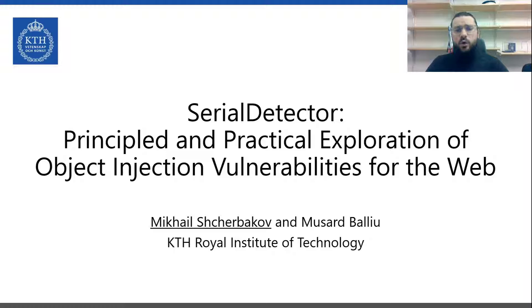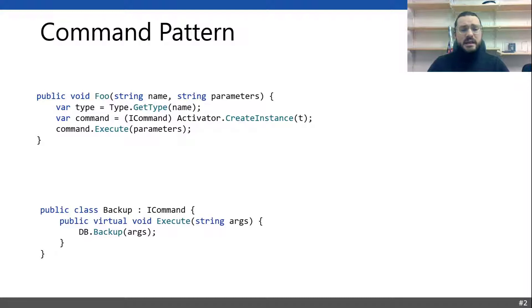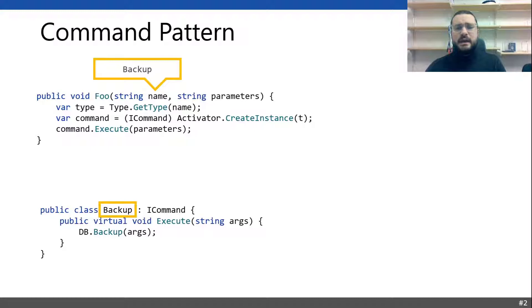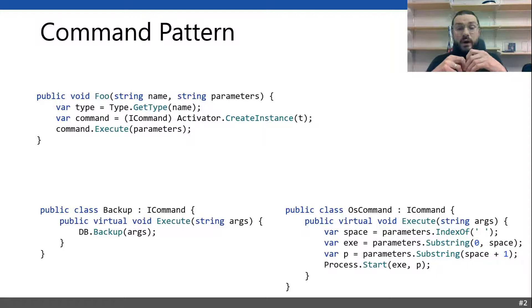I start with two examples that illustrate what an object injection vulnerability is. This is an implementation of the command pattern in object-oriented languages. This is C-sharp code and the method foo creates an object that implements a command interface. For example, if a user passes a string backup in the parameter name, the code instantiates an object of backup type and runs the method execute. The main benefit of this approach is that a developer can extend the application without modification of the method foo. However, this comes with some security risks. If the code base contains an implementation of a command interface that executes arbitrary code, the attacker could exploit it.